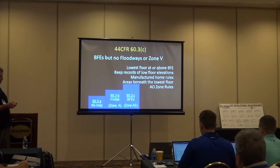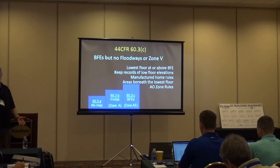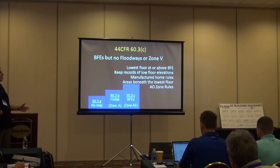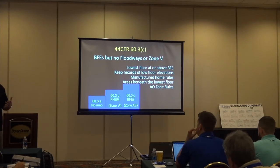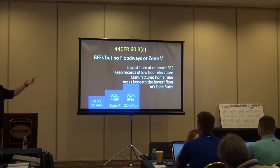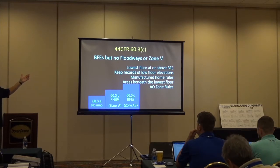I start to have rules for manufactured homes — I can't just back in a double-wide and say I'm done; they have to adhere to some of the same requirements. I start to have requirements for areas beneath my lowest floor. If I have an elevated structure, I can't just fill in that area. And I have AO zone rules — remember, AO is sheet flow. In AO I don't have a BFE; I have a depth.